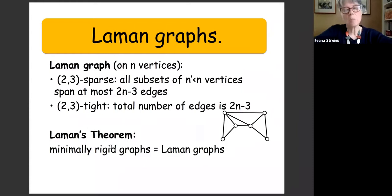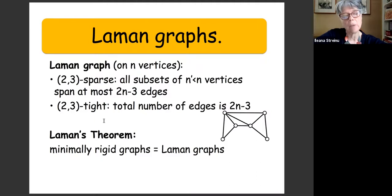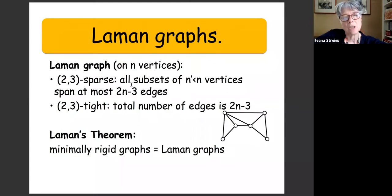The rigidity matroid in dimension one is the classical graphical matroid. In dimension two, Laman's theorem connects graphs with these sparsity properties to minimally rigid graphs — graphs that except for a measure-zero set of distances will be rigid and not flex. This is what does not extend to higher dimensions: we do not have the counterpart of Laman's theorem in higher dimensions. There exist sparsity conditions due to Maxwell from the 19th century, but those are known to be necessary but not sufficient, and they don't form a matroid.